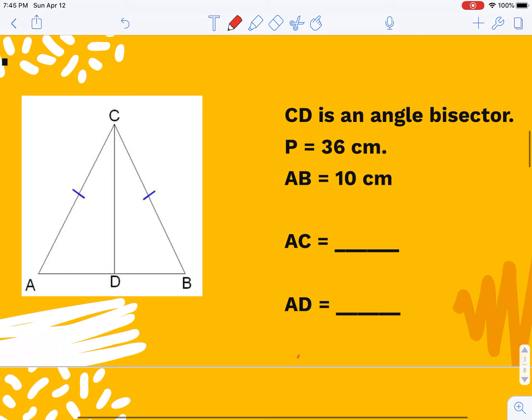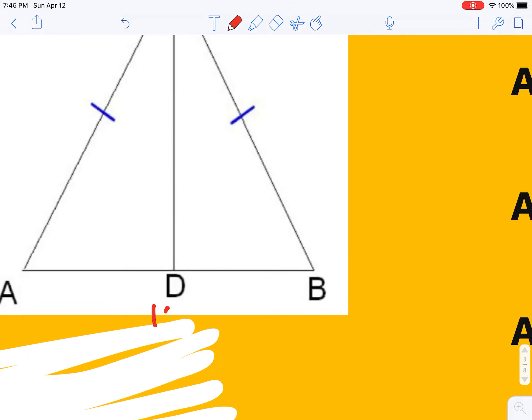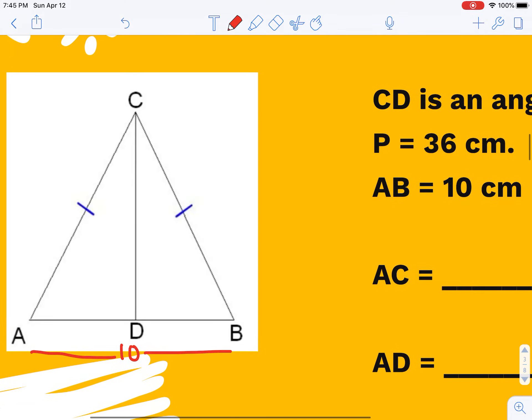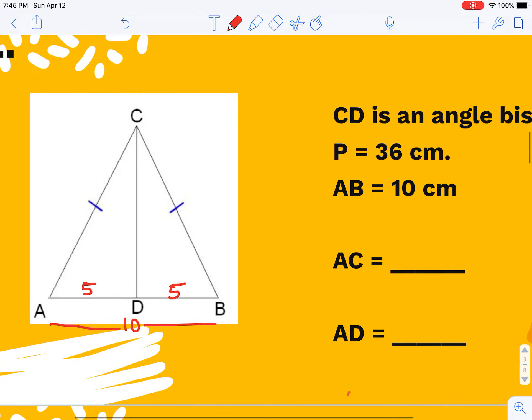I'm told CD is an angle bisector and that the perimeter is 36. They give me AB is 10. Because that's an angle bisector, it's also the median, so each piece here will be 5. So AD will be 5 centimeters. Then to find AC, which is this side, these sides will have to be the same because it's isosceles. So 36 minus 10, I have 26. So each side gets 13 centimeters.